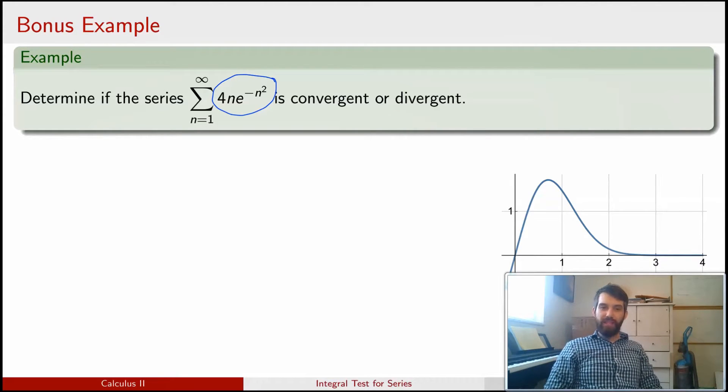If I look at this, I'm very tempted to do an integration because I see an e to the minus n squared multiplied by a power of n on the bottom. It kind of screams u-substitution to me, but that's something we did back in integration. So let's just compare this to the improper integral.